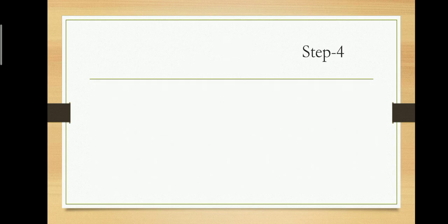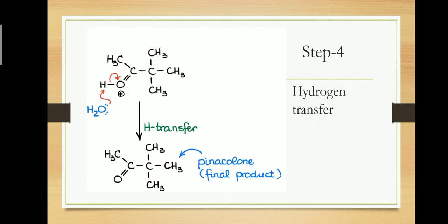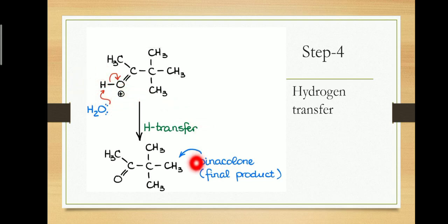Step 4 is a hydrogen transfer. The oxonium ion loses its hydrogen, resulting in the formation of the product — a ketone, C double bond O. This ketone is the pinacolone, which is the final product.